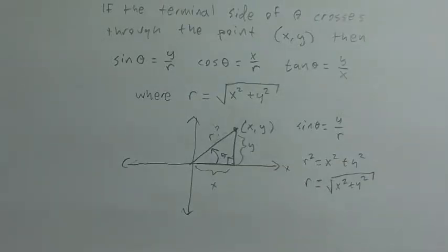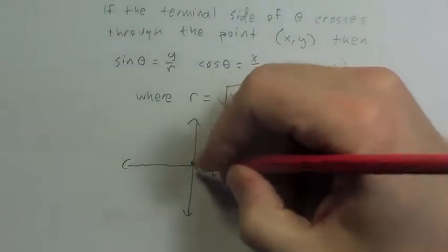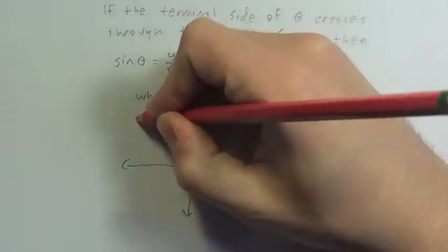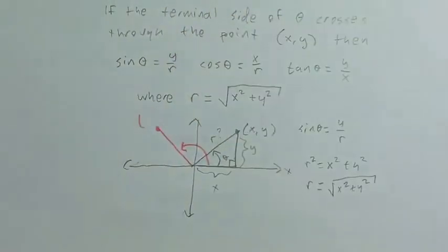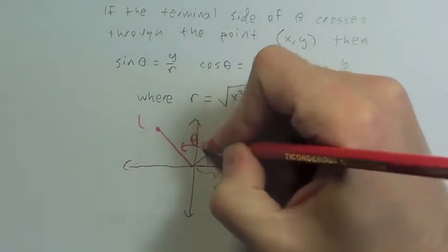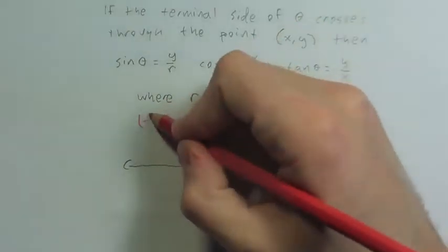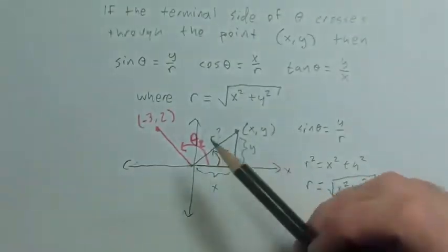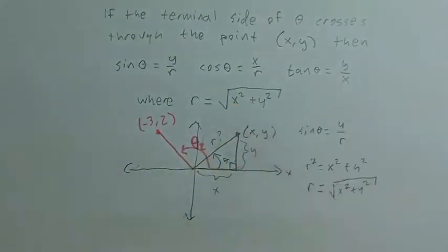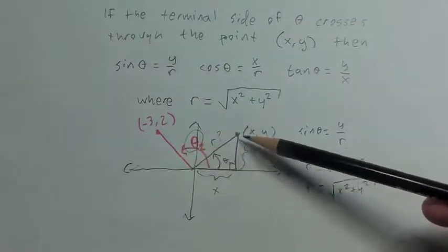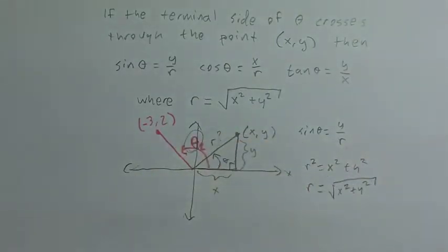The nice thing about this is it's going to work no matter what my angle is. So if my theta takes us into quadrant two — say it takes us to the point negative three, two — we can still find trig functions of this angle using this formula. It doesn't have to be in the first quadrant where we can make the right triangle.